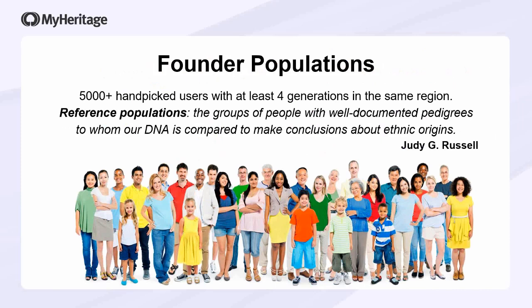How can MyHeritage be sure which countries that DNA belongs to? MyHeritage, remember, started with family trees. So we handpicked about 5,000 of our own users who have good, sourced, and researched family trees with at least four generations in the same region, and we asked for their DNA to use as a sample. This is what I call the ruler — when we compare your DNA to that DNA, the more it resembles it, the higher the percentage you are from that area. My friend Judy Russell calls this a reference population.